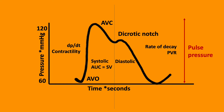The pulse pressure is the difference between the systolic minus the diastolic. The area under the curve for the systolic component is a reflection of the stroke volume, depicted as the area under the curve to the left of the dotted line.